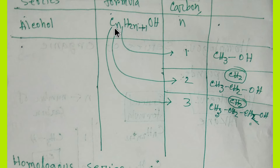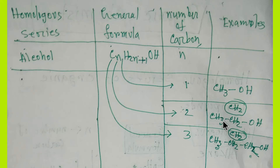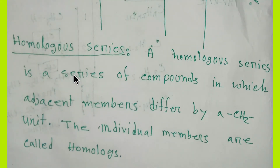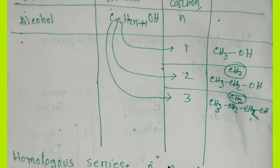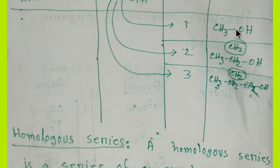If you take n=3, you get propanol, and the difference between these two compounds is again CH₂. So now we can define homologous series: a homologous series is a series of compounds in which adjacent members differ by a CH₂ unit. The individual members are called homologs.